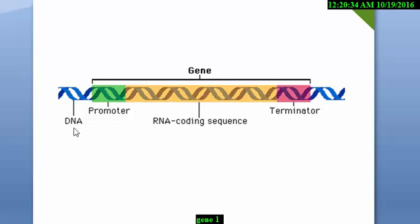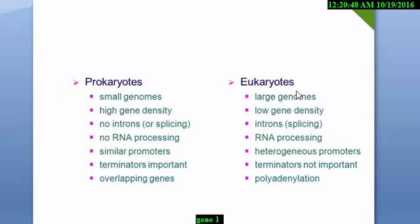Here is another, simpler picture. That is DNA, that is the promoter we discussed, and there is a terminator. The coding region contains exons, and the introns are spliced out. Then by the termination of the transcription process, we get a protein.